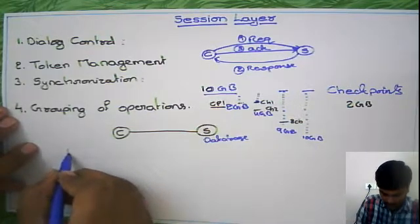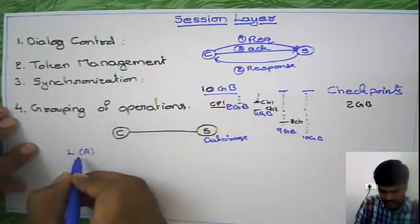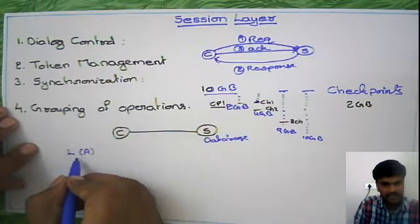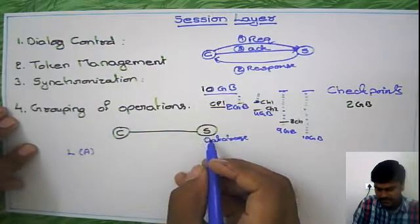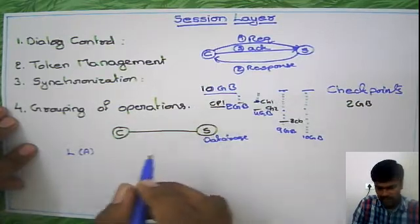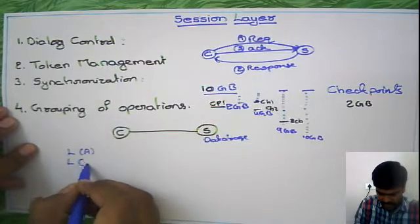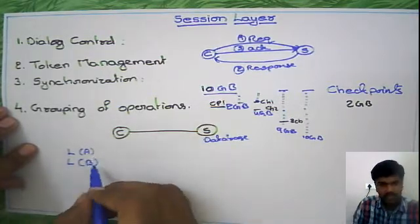Suppose you need to update the A field in this database and the B field in this database, somewhere in some table or anywhere you want to update A value and B value. So what you have to do initially is you have to put a lock on these two.